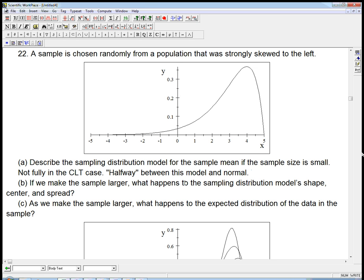If we make the sample larger, what happens to the sampling distribution model's shape, center, and spread? Well, the shape becomes more normal.